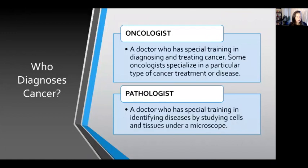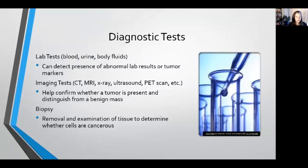An oncologist is a doctor who has special training in diagnosing and treating cancer. Some oncologists even specialize in a particular type of cancer treatment or disease, such as a hematologist oncologist who specializes in treating cancers that originate in the blood and marrow. A pathologist is a doctor who has special training in identifying diseases by studying cells and tissues under a microscope. Oftentimes to get a cancer diagnosis, both an oncologist and a pathologist will play important roles.